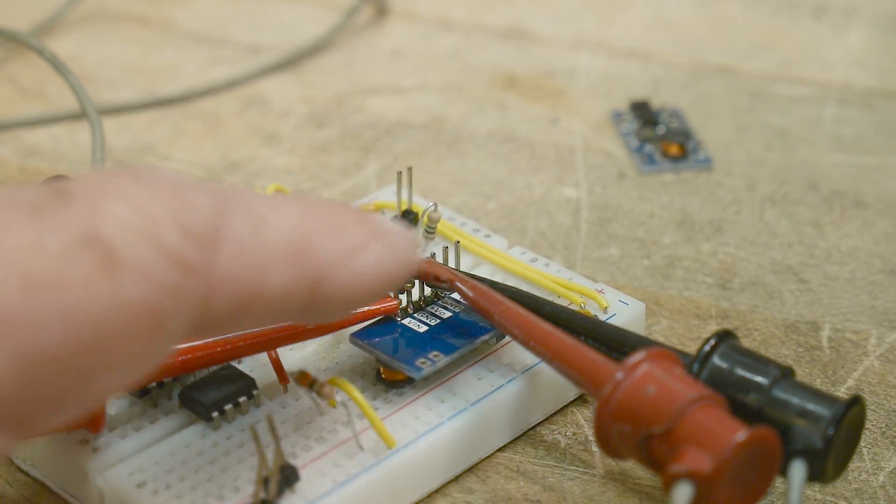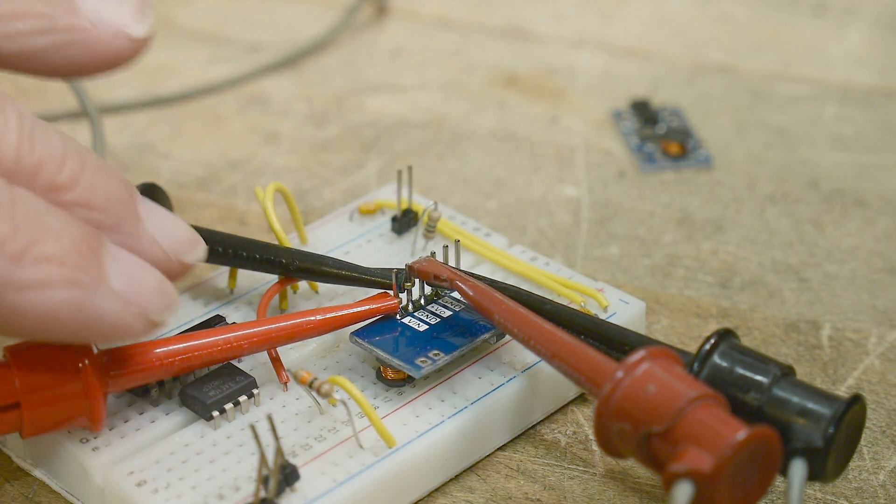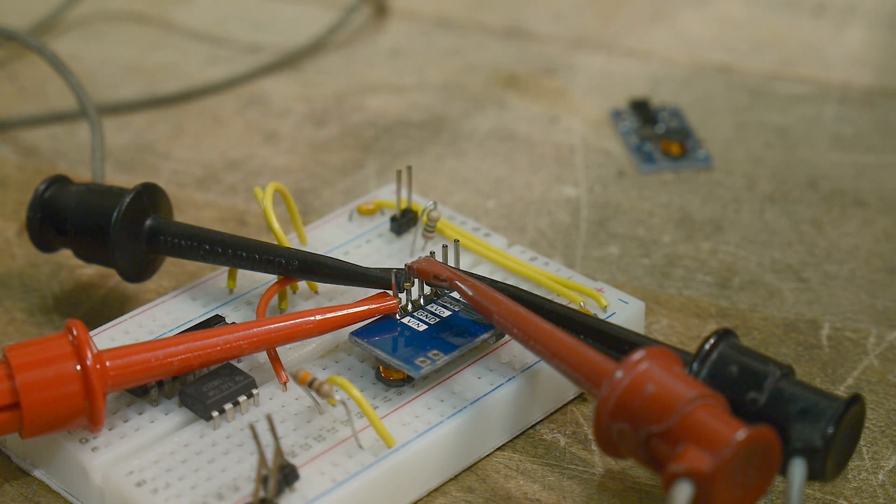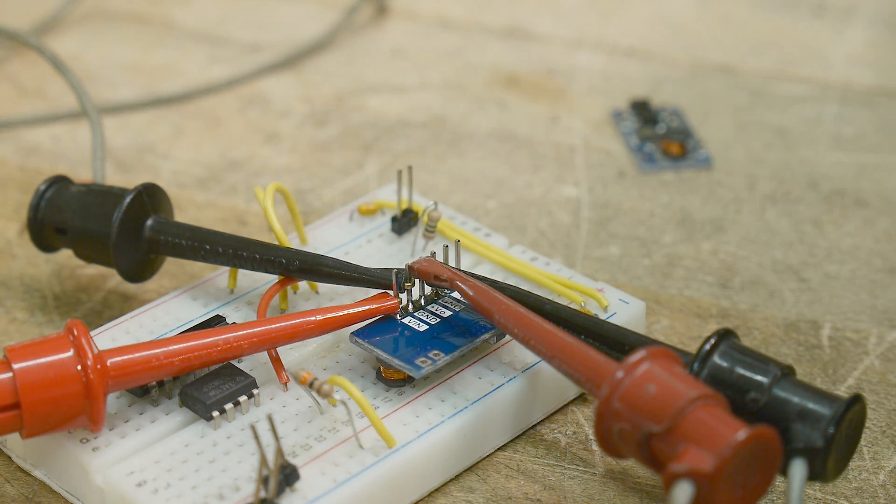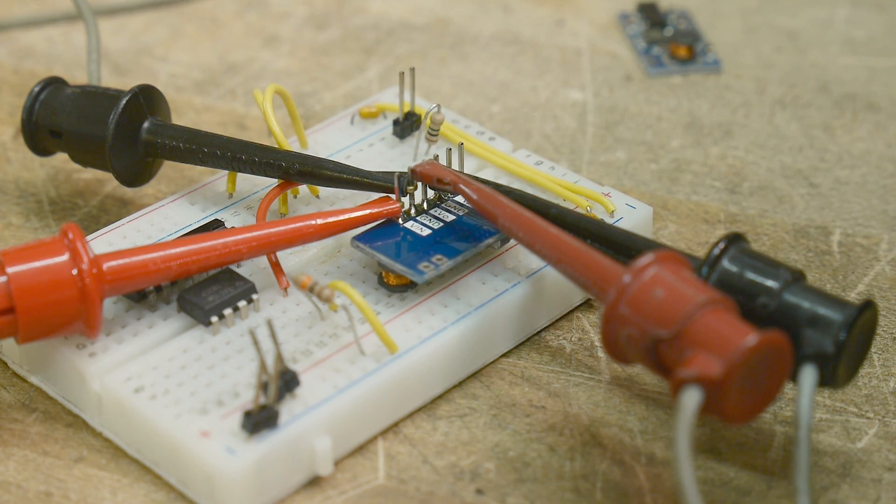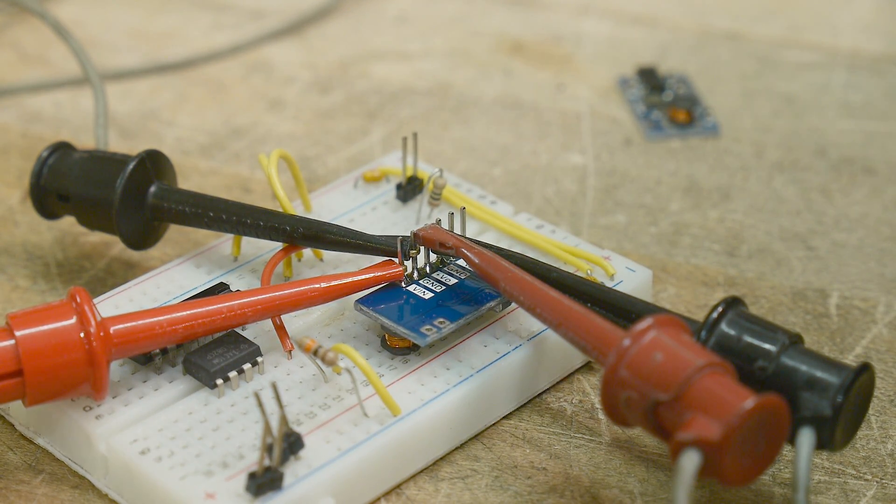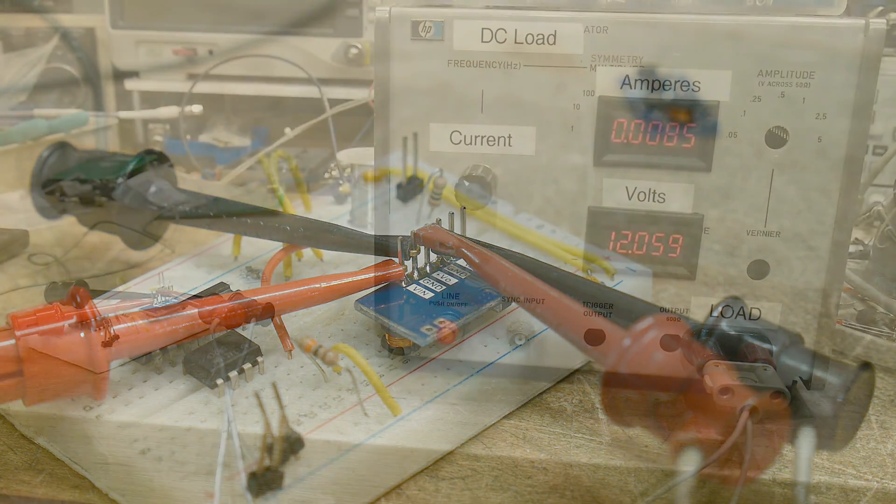So I have one connected here. I've got five volts going in and it's actually 5.1. Let me lower it down to exactly 5.02. There we go. Five volts going in and then we will see what kind of voltages we can get on the output.